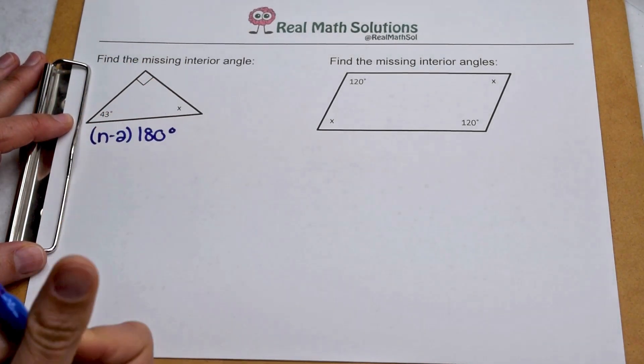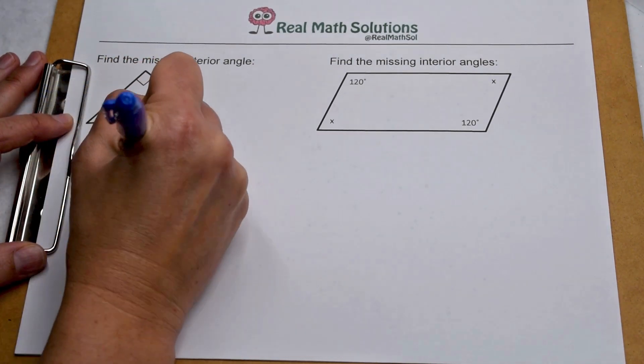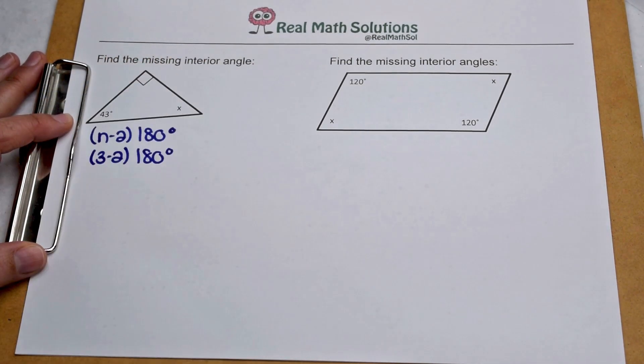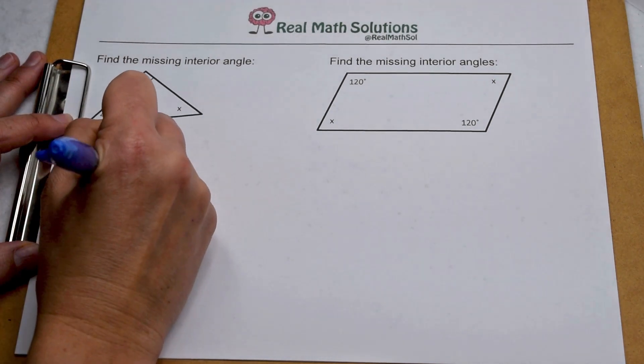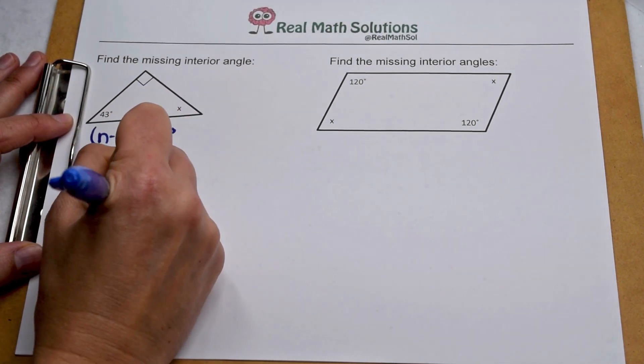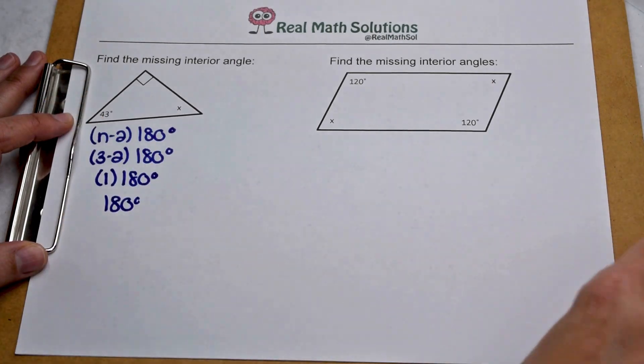To do that, we're going to use our equation: number of sides minus 2 times 180. Well, a triangle has three edges, so we're going to start by doing 3 minus 2. 3 minus 2 is 1, multiply that by 180, and our triangle has an interior angle sum of 180 degrees.